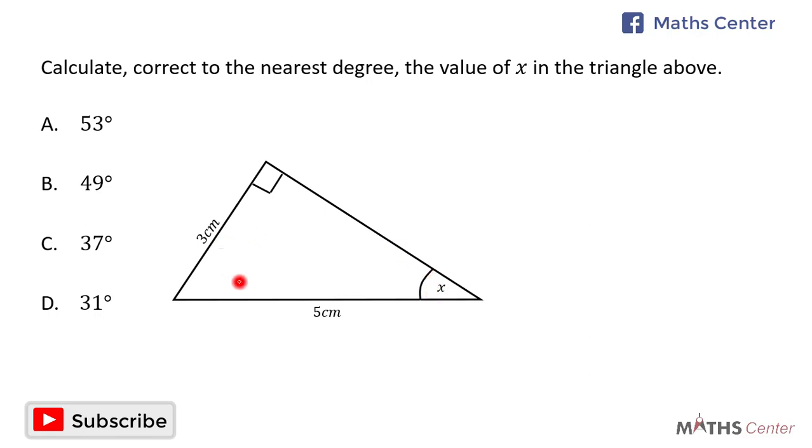In this right angled triangle, 5 centimeters is the hypotenuse because it is the longest side and also it is the side facing the 90 degrees angle. So 5 centimeters is the hypotenuse.